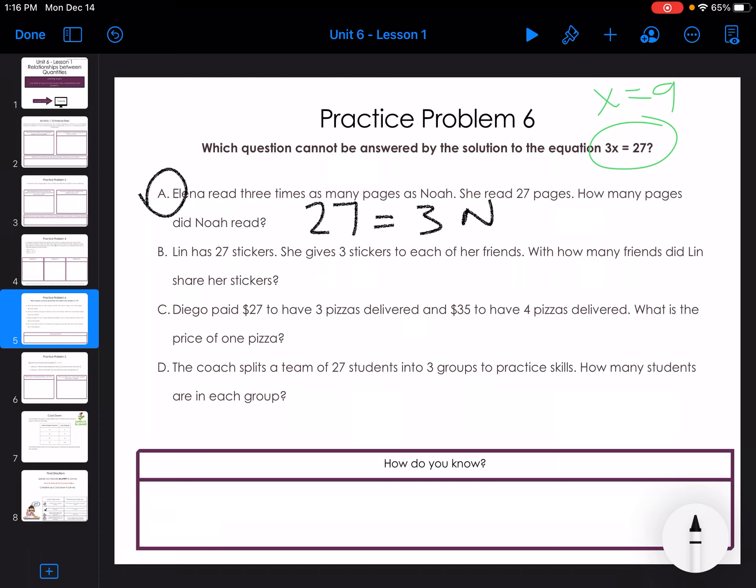B, Lynn has 27 stickers. She gives 3 stickers to each of her friends. How many friends did Lynn share her stickers with? So I'm dividing by 3, and I get 9. If I'm looking at it, I'm getting the right answer there. But when I look at it, that's division, and this is multiplication. But they're asking for the question that cannot be answered.